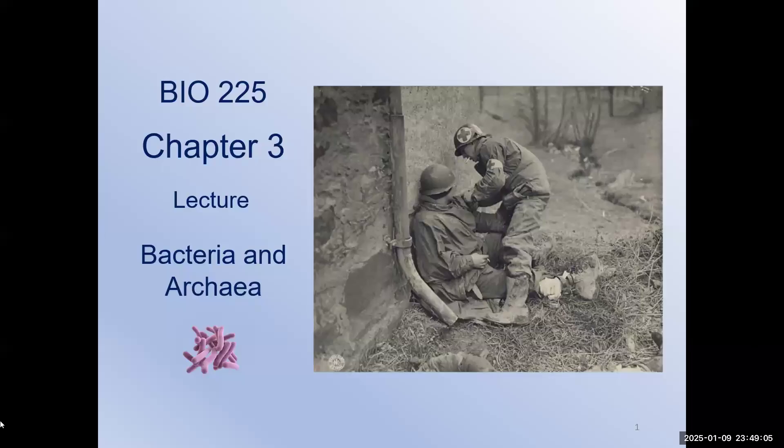Alright, so this is Chapter 3, Bio 225, Chapter 3, Bacteria and Archaea. With Chapter 3, we actually start getting into some microbiology. If you remember back to Chapter 1, we divided microbes into prokaryotes and then the akaryotes as well, which are those without a nucleus, and then eukaryotes, which are those with a nucleus. In Chapter 3, we look at the microorganisms that lack a nucleus. These are the bacteria and the archaea.